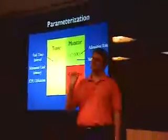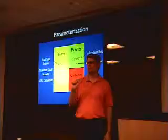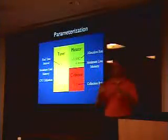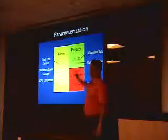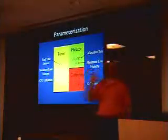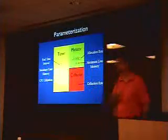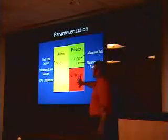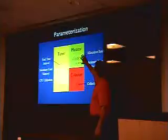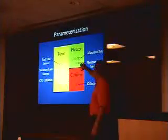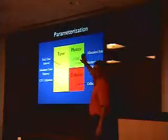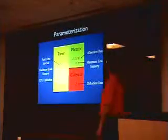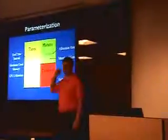Once you've specified that, I can basically characterize what's going to happen — we characterize the collector. When you start up the system, you specify your max log, your allocation rate. You tell us what your real-time interval is, which we call delta T.